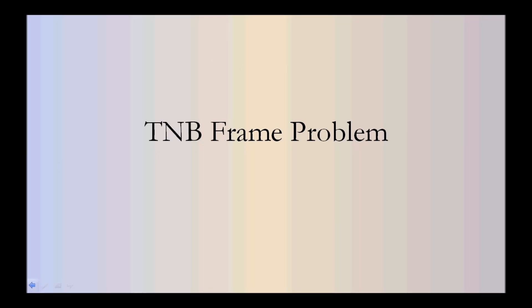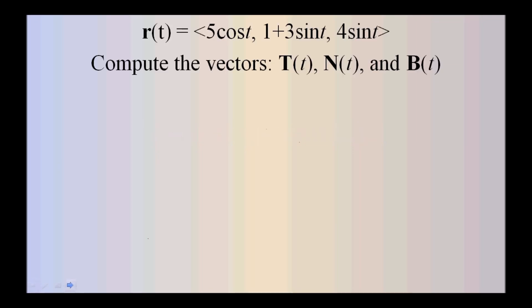Here we're going to solve a TNB frame problem. We're given the curve r(t) equal to (5cos(t), 1 + 3sin(t), 4sin(t)), and we're asked to compute the vectors T, N, and B. T is the unit tangent vector, which indicates the direction that the curve is going.